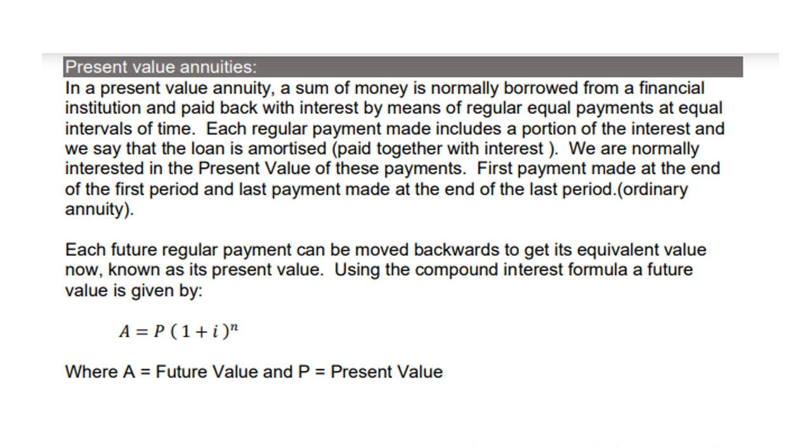Each future regular payment can be moved forward to get its equivalent value now, known as its present value. Using the compound interest formula, a future value is given by A equals P times 1 plus i to the power n, where A is future value and P is the present value.